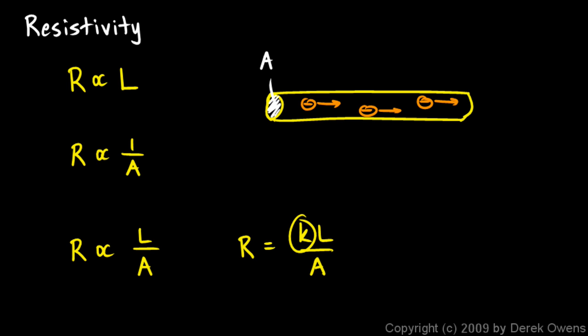We typically don't call it K; we typically use the Greek letter rho for resistivity. Specifically, that's the resistivity of the material. Different materials have a different number for resistivity, so we would write the equation like this: R = ρL/A.